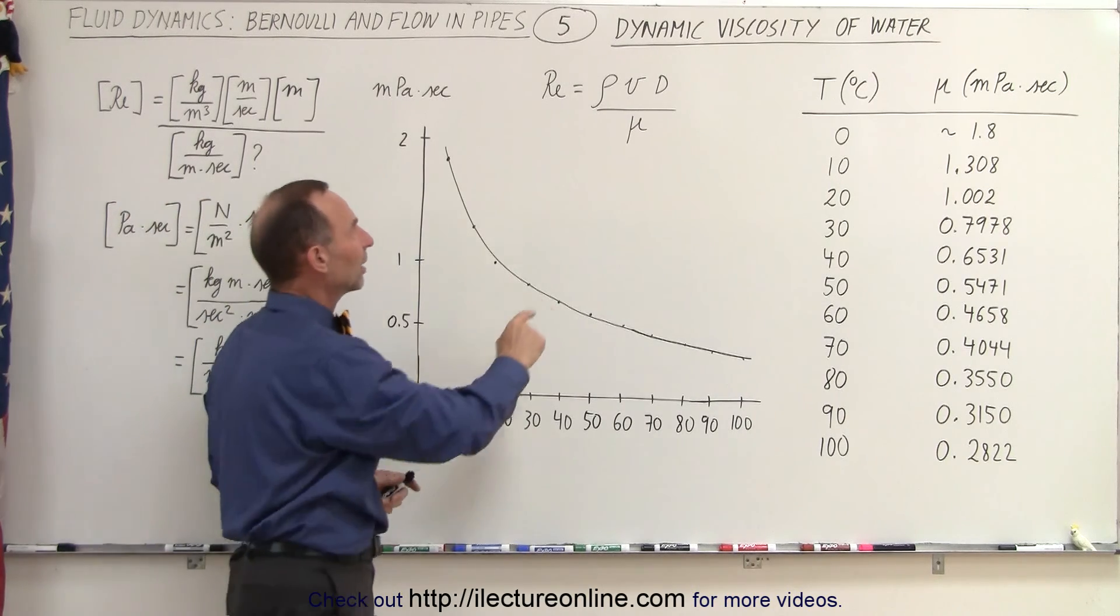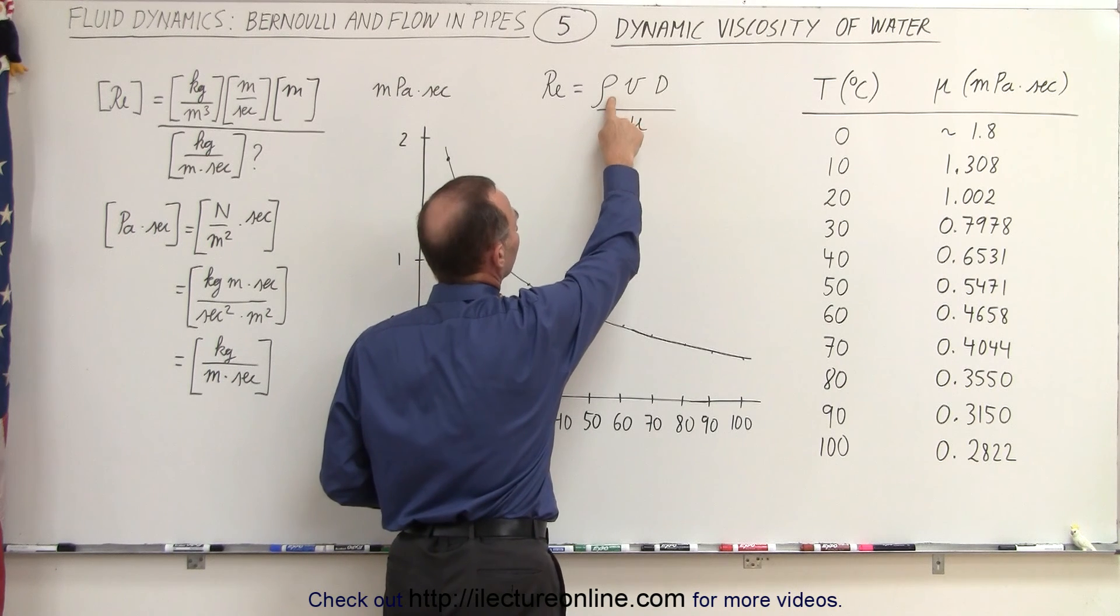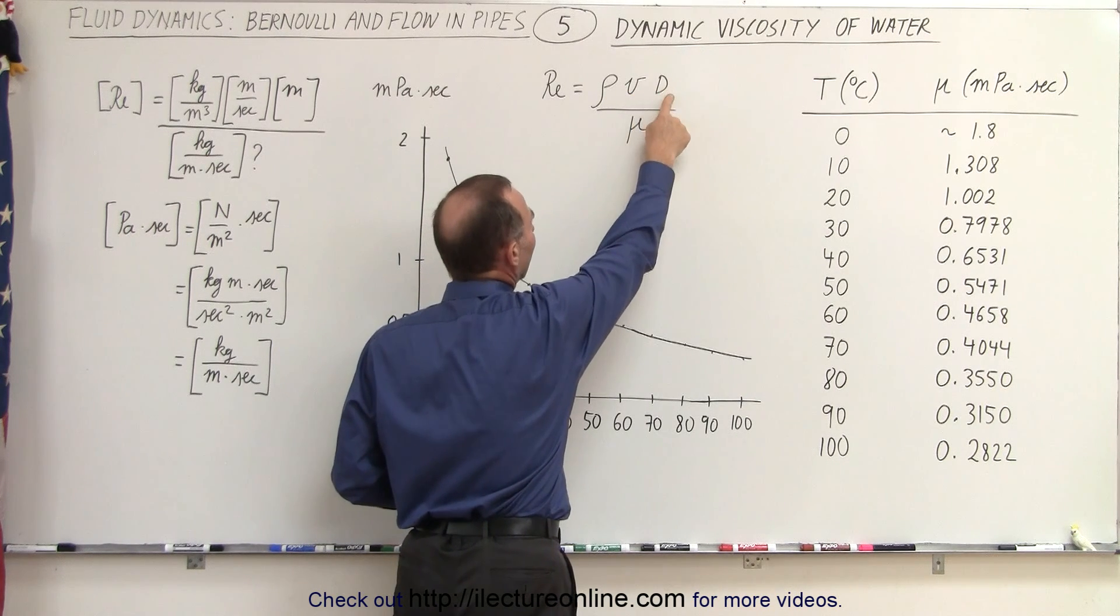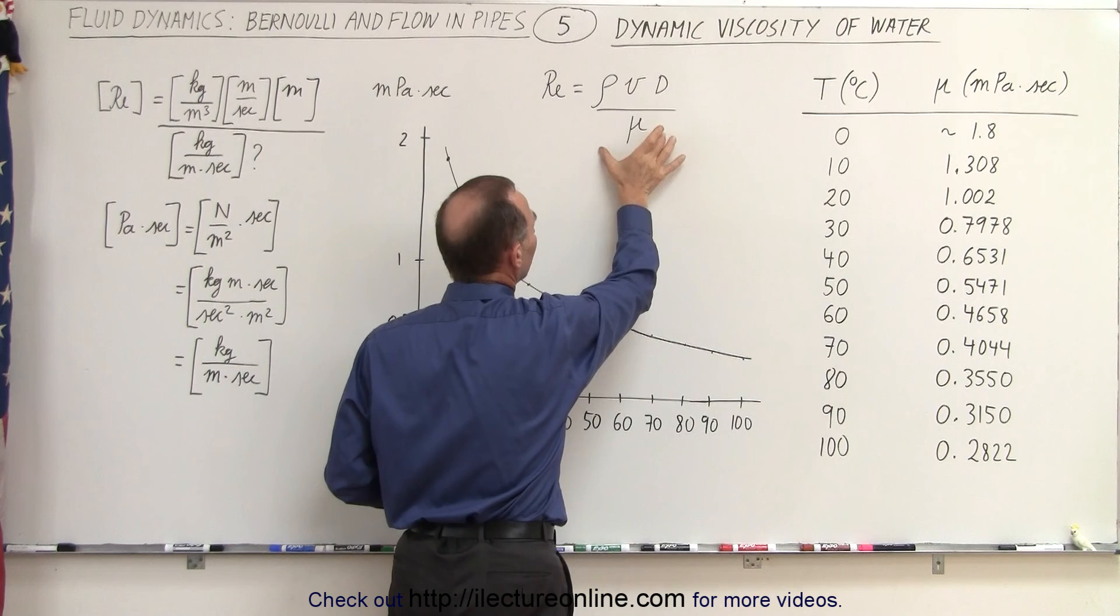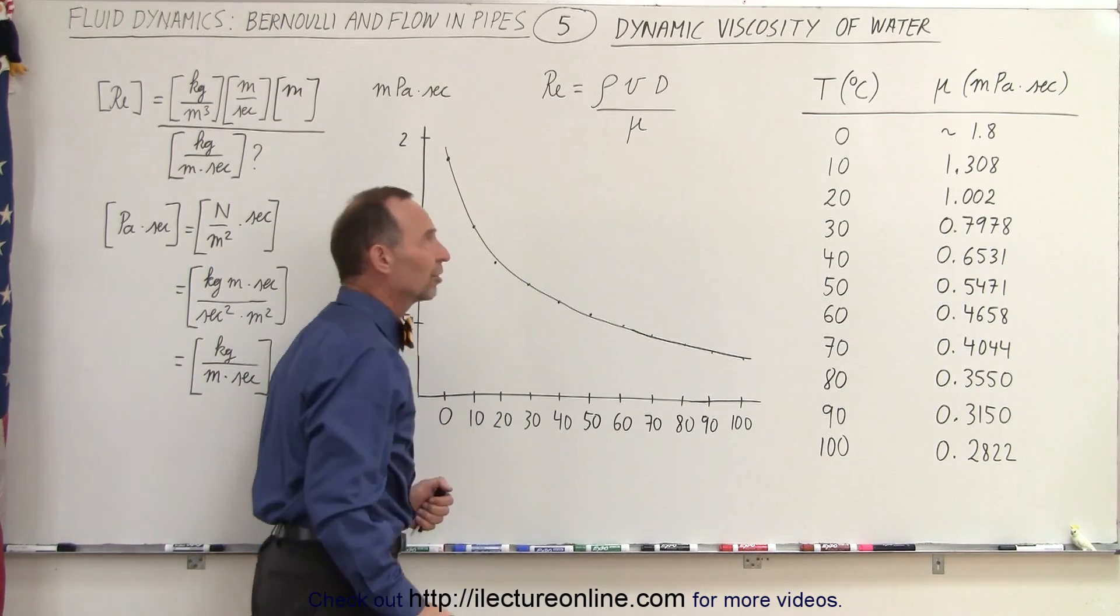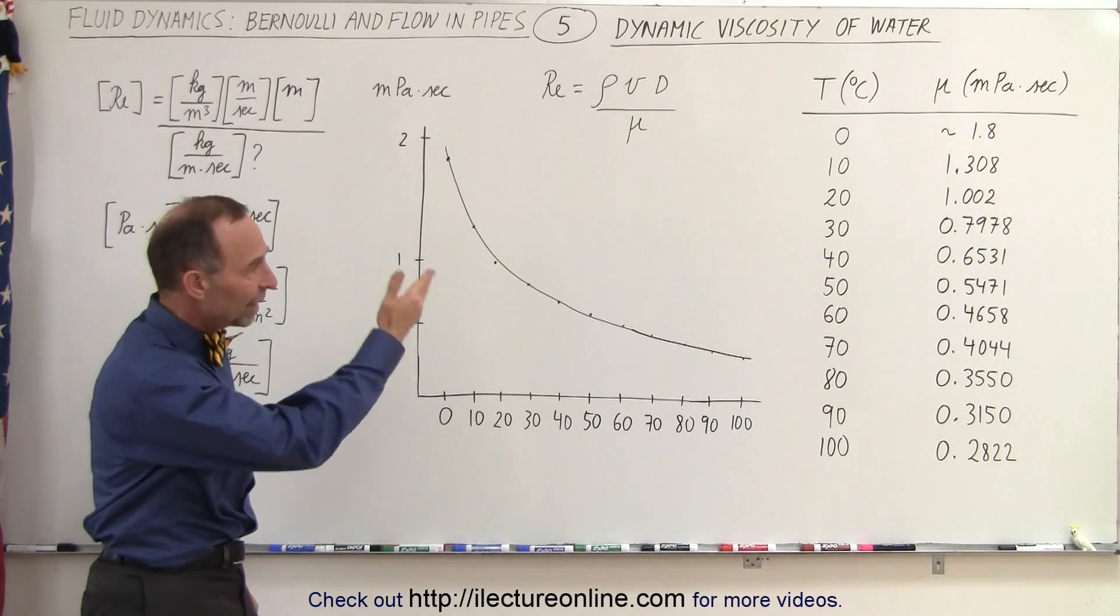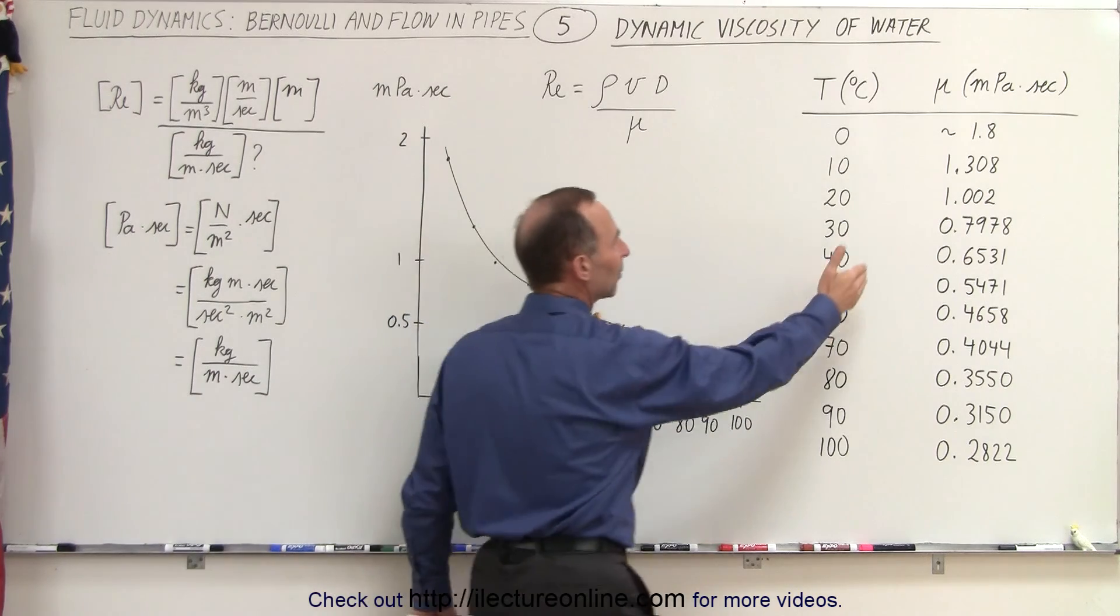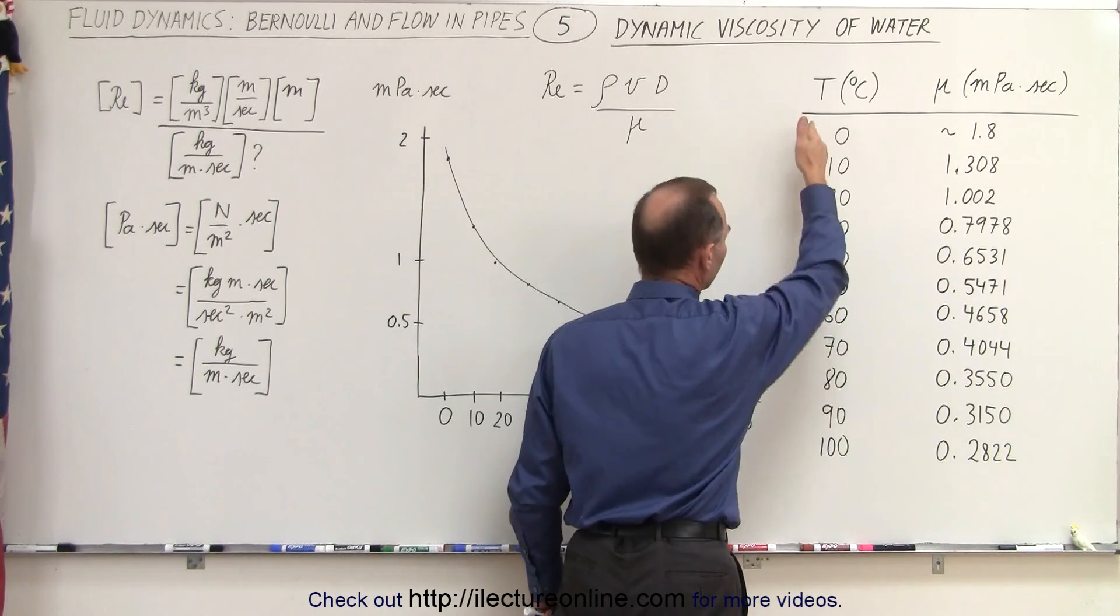So you can see here that the Reynolds number is calculated by multiplying the density of the fluid with the velocity and the diameter of the pipe, but we divide it by what we call the dynamic viscosity of water. And here we have a table that represents the dynamic viscosity of water as a function of the temperature.